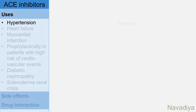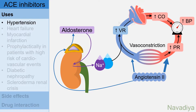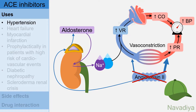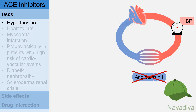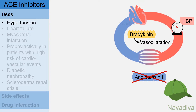First use is hypertension. We already know that angiotensin II increases blood pressure in various ways. With ACE inhibitors there is no more angiotensin II, so all these effects are lost resulting in a fall in blood pressure. Also, there is accumulation of bradykinin which causes vasodilatation, contributing to some of the blood pressure lowering effect of ACE inhibitors.